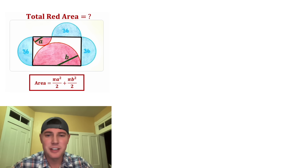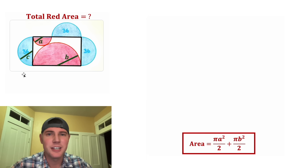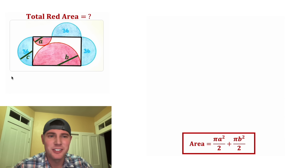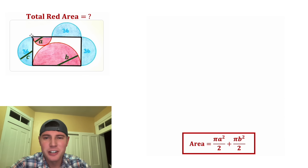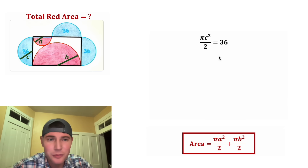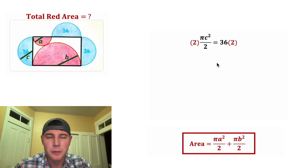So if we add these together we'll have the total red area. Let's put a box around this and move it down here. Next, for the three blue semicircles, let's give them a radius of c. Since we already know these are 36, this is probably the easiest place to start. For this semicircle we'll say πc²/2 = 36.